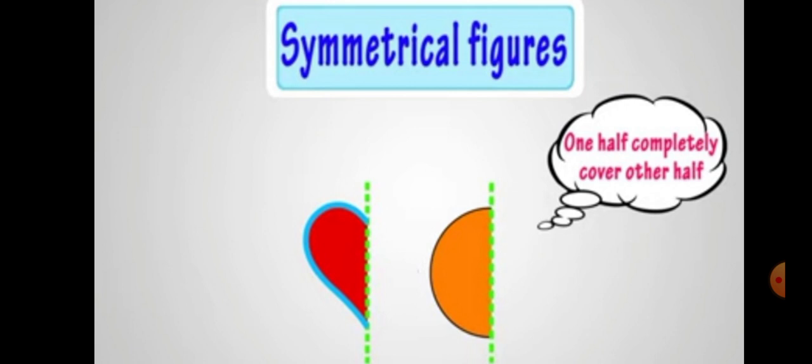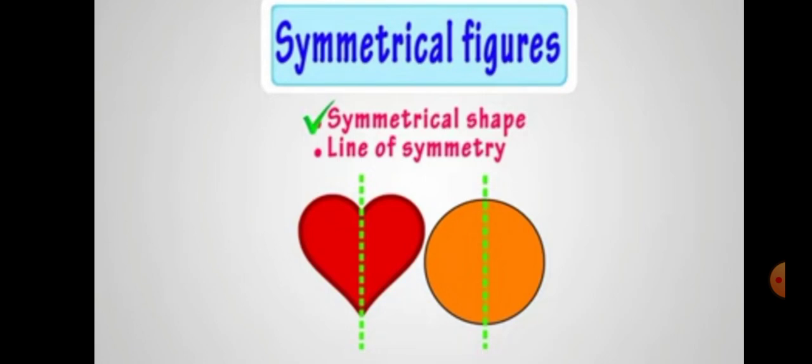Similar is the case with the circle also. This green dotted line shows that this is the line of symmetry and it divides the circle into two equal parts. So here, heart as well as circle, both are symmetrical shapes.